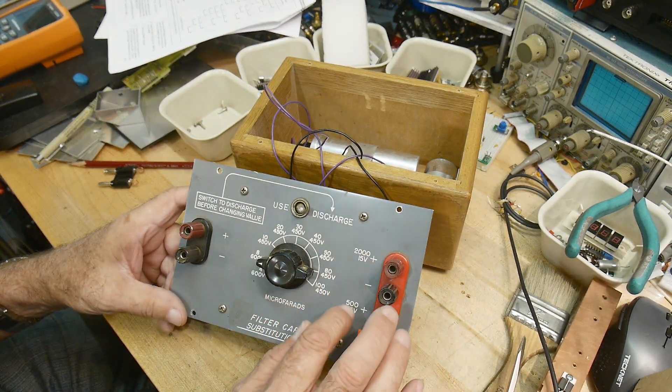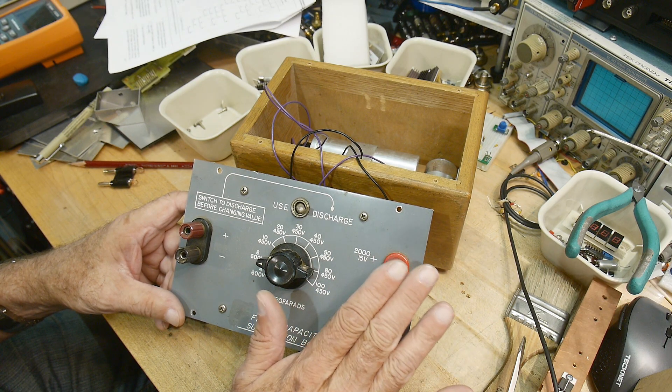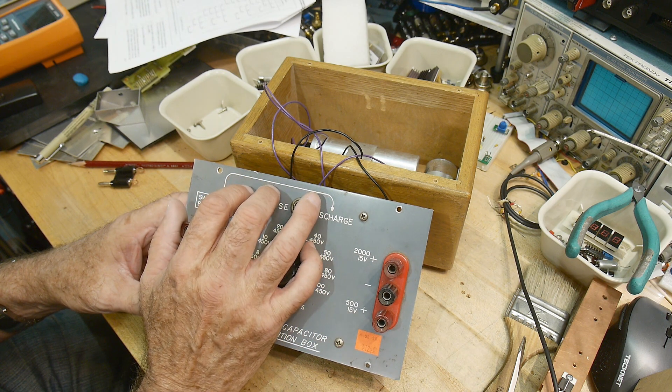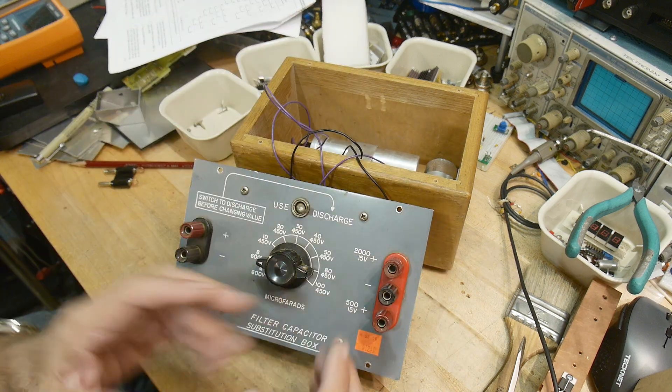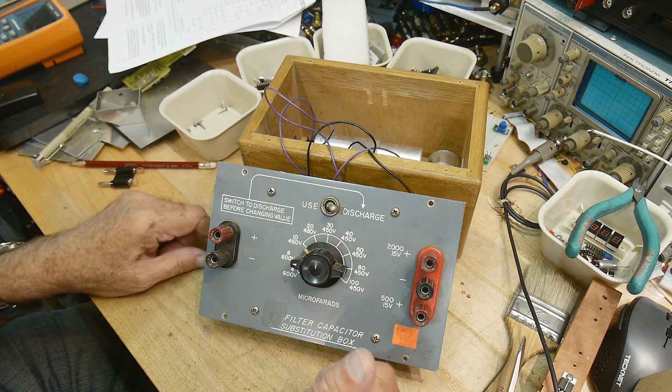These are 500 and 2000 but only up to 15 volts, so this is for your low voltage supply work. And then for your high voltage supply work was over here. So it's a two in one box. Oh, there you go.